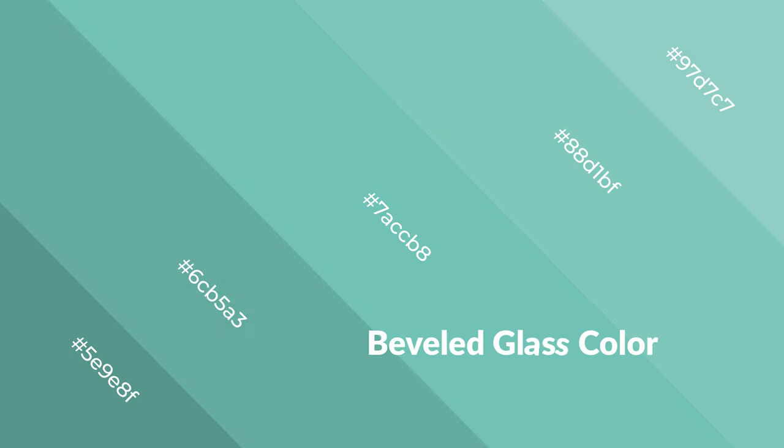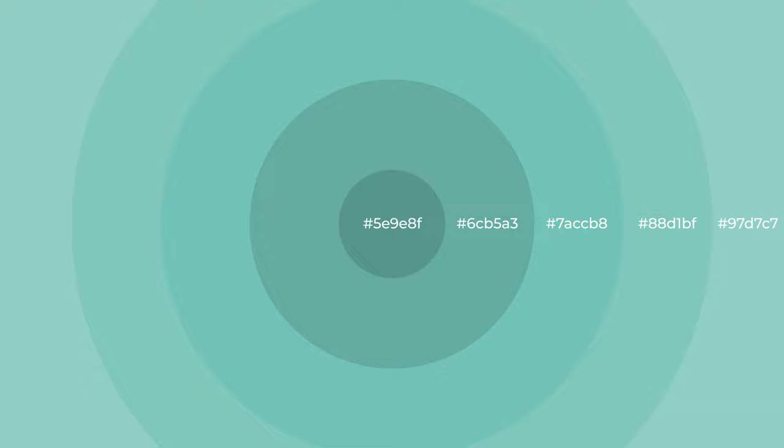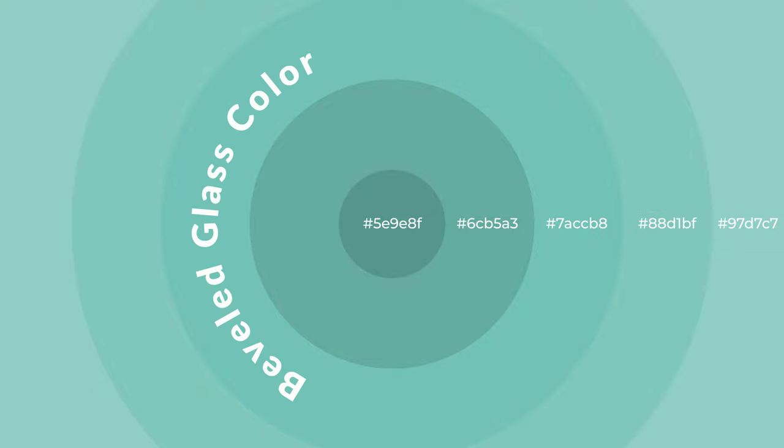Cool colors are like water, ice, sky, grass, soft, and snow. You can see them used in baby products.